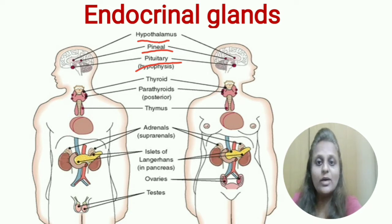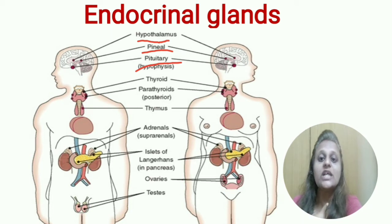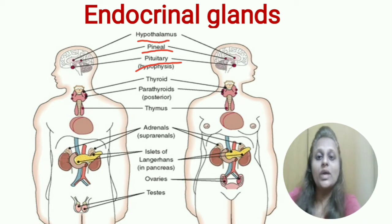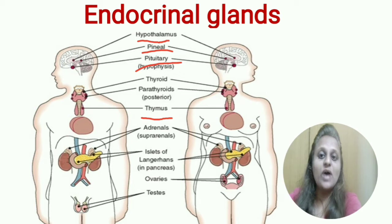The pituitary gland is also called hypophysis. In the neck, the thyroid gland and parathyroid gland are present — these two glands are present in the neck. After that, the thymus gland is present in the upper part of the heart.